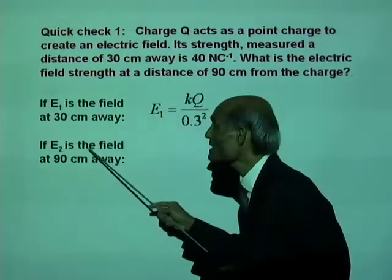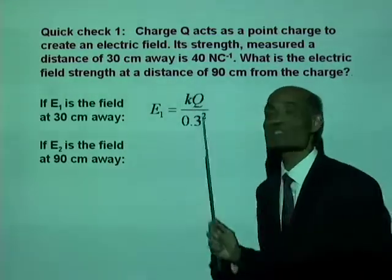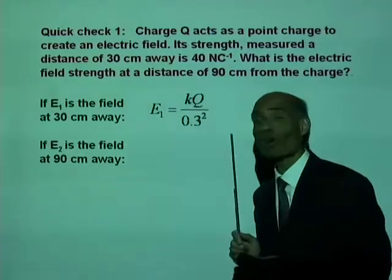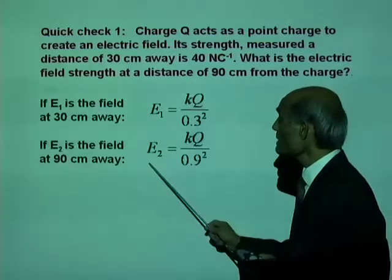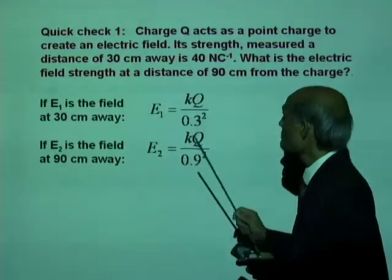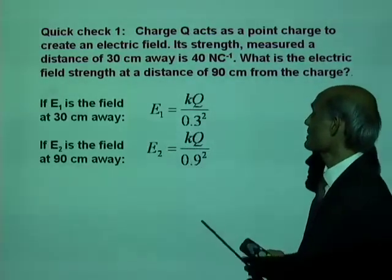If E2 is the electric field at 90 cm away, can you write an equation for E2? Well, you can. E2 equal to KQ divided by 0.9 squared.